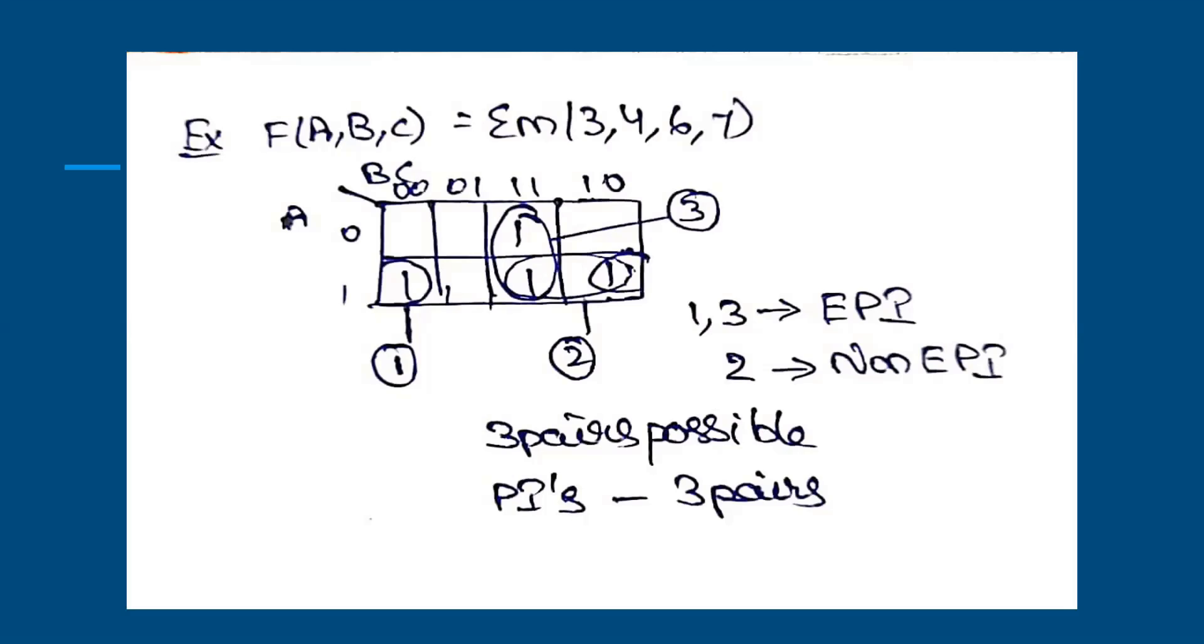Here, after pairing, let's see. 4 and 6 can be paired, it is one set. 7 and 6 can be paired, it is a second set. 3 and 7 can be formed, it is a third set.